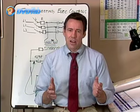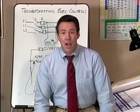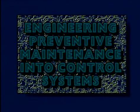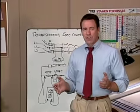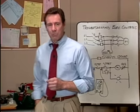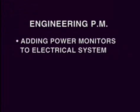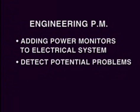The preventive maintenance guidelines are your first line of troubleshooting defense against problems. Another way we can improve our preventive maintenance program is by engineering preventive maintenance into our control systems themselves in order to detect problems before they happen. For example, by adding power monitors to our electrical distribution system, we can detect around the clock, 24 hours a day, every day, conditions that could damage equipment and which could go undetected until equipment failure finally occurs.